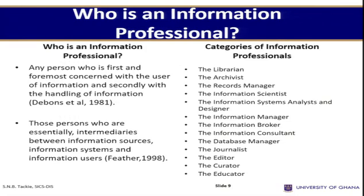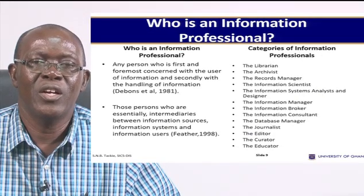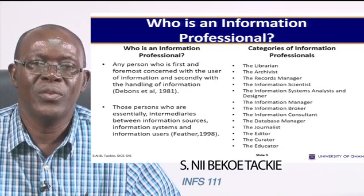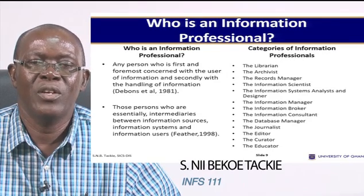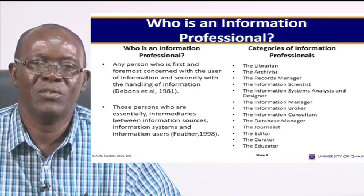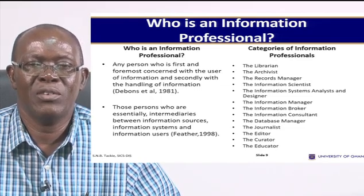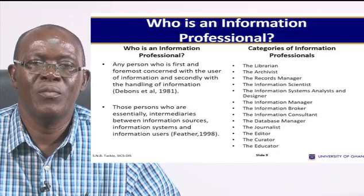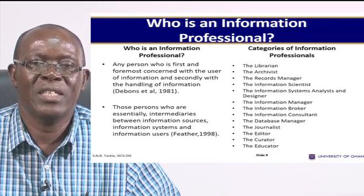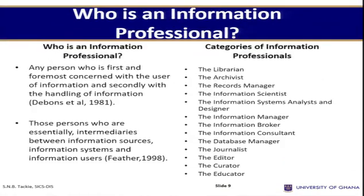The librarian is the one in charge of the library, responsible for looking at the user profile, identifying and acquiring relevant materials — whether electronic, print, or both — that will satisfy the needs of the user community. The archivist preserves and manages active records for the organization. The information scientist is interested in the nature and theory of information and how information is handled. The information systems analyst and designer is concerned with evaluating the system and responding to changes or updates needed.